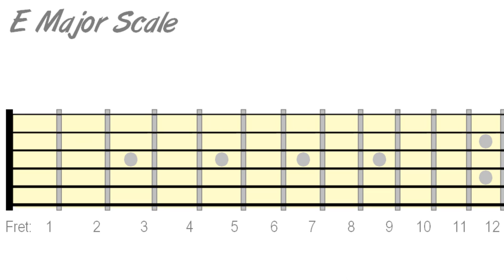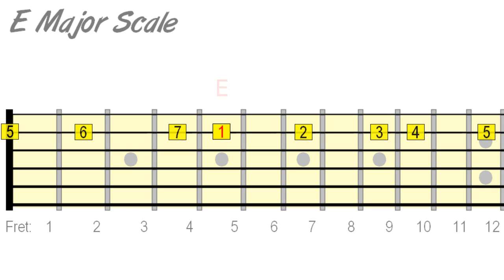Next, try and find the open root on other strings. Going back to E major, we should know that E also exists on the B string at the 5th fret, from which we can play the scale using our knowledge of its interval sequence.